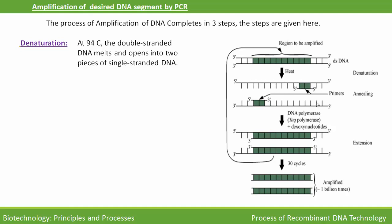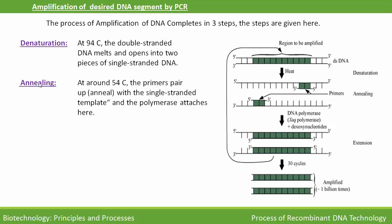Now come to the second step of amplification, i.e. annealing. It occurs at 54 degrees centigrade temperature. As you can see in the diagram, in the annealing step the primer pairs up or anneals with the single-stranded DNA template, and the polymerase also attaches here for extension.